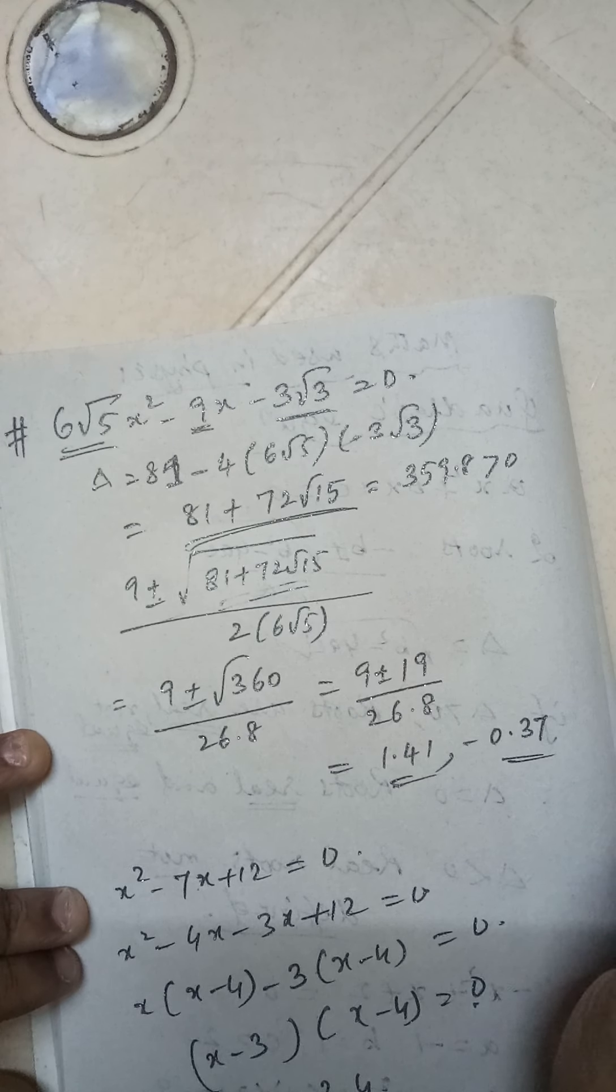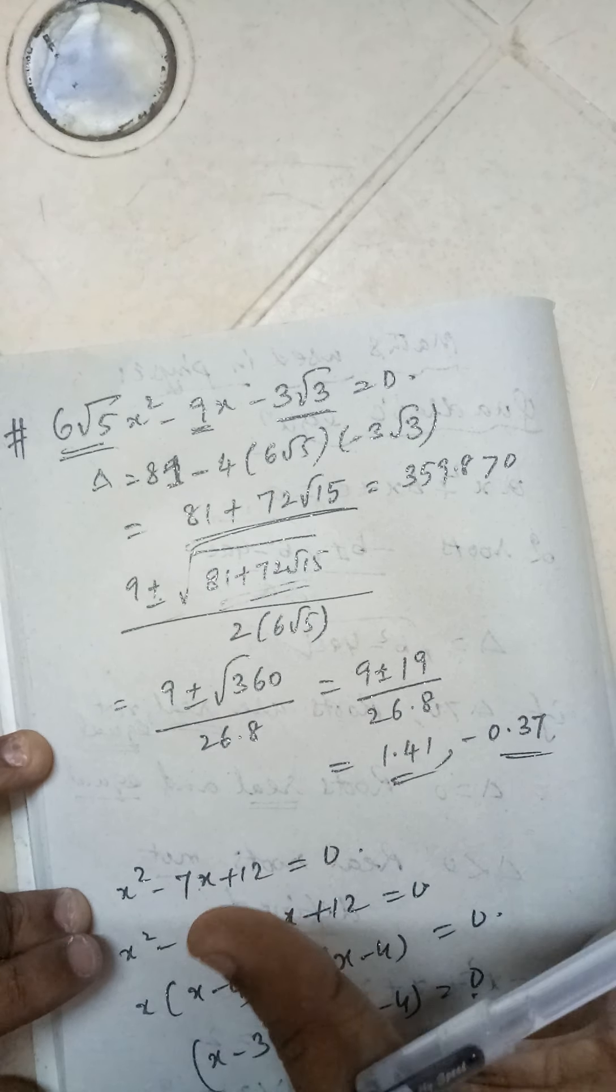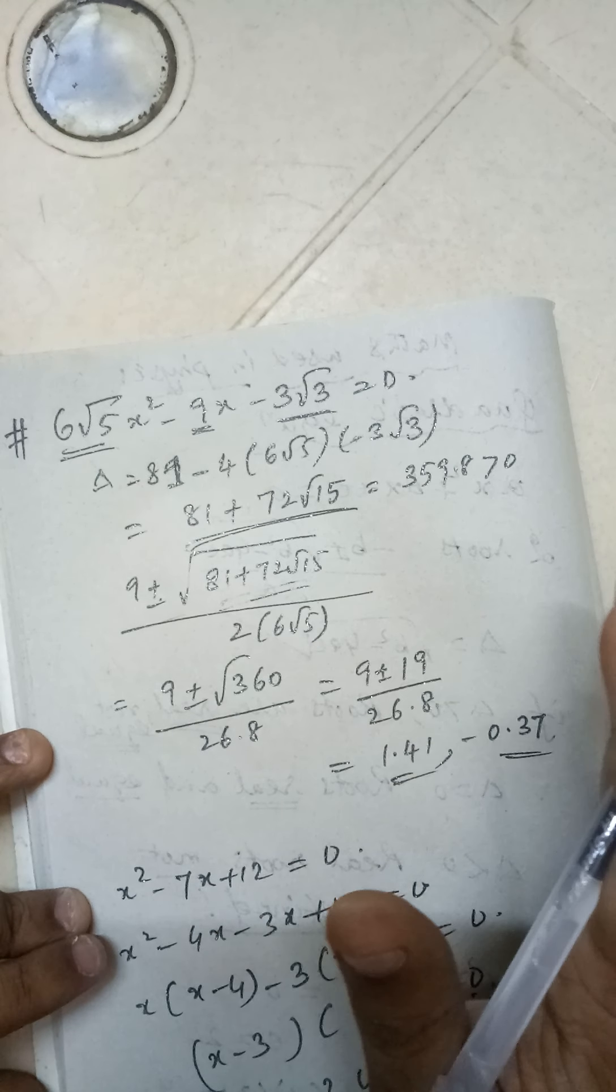So when you exactly solve this: -b ± √(this value) / 2a. When you solve this, you get two roots - one is 1.4, one is -0.37. You can convert this into surd also, but basically here the idea is to calculate the roots of the equation.